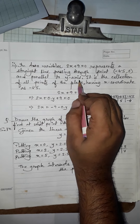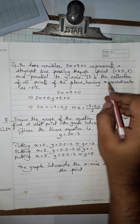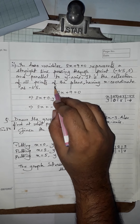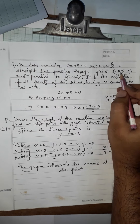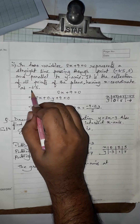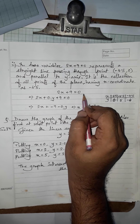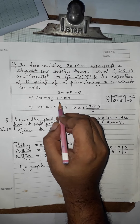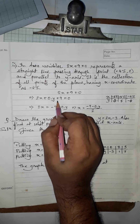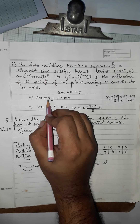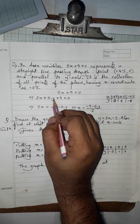The line is parallel to the y-axis and is a collection of all points in the plane having x-coordinate as −4.5. So 2x + 9 = 0 can be written in two variables by putting the coefficient of y as 0: 2x + 0·y + 9 = 0. No changes are actually made, but we have written it in two variables x and y, keeping 0 as the coefficient of y.